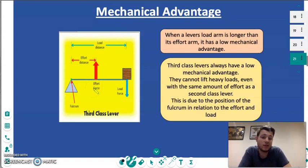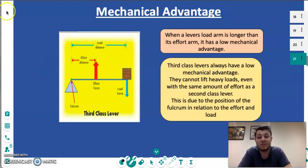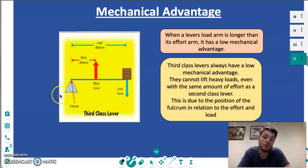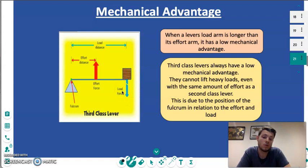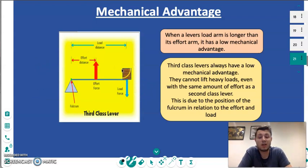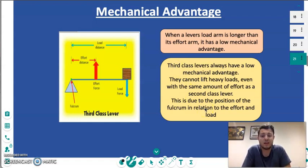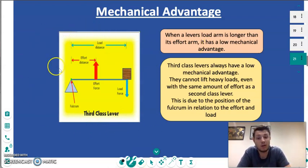Where the second class lever has a high mechanical advantage, a third class lever is always said to have a low mechanical advantage. This is simple to identify if we just look at the picture of a lever — if we have the effort in between the fulcrum and the load, the load arm is always going to be longer than the effort arm. That means we're going to have to put more effort into whatever we're doing to get the same result. The third class lever is always identified with the bicep curl, and this is a perfect example of mechanical advantage in practice.